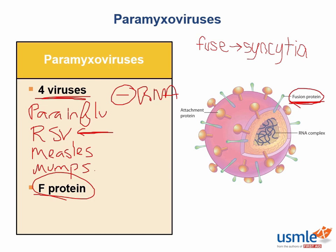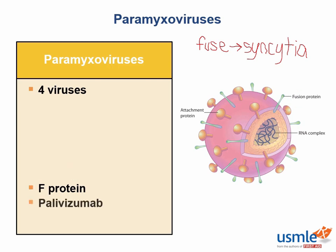For respiratory syncytial virus, which can cause severe bronchiolitis in infants, we can give a monoclonal antibody called palivizumab. This monoclonal antibody targets the fusion protein, and it prevents bronchiolitis and pneumonia in premature infants.